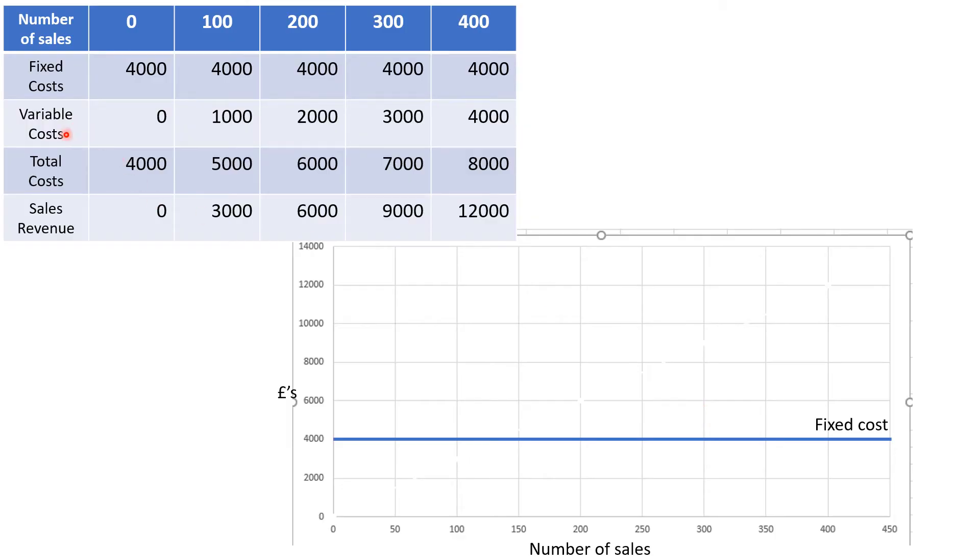Now you don't put the variable cost line on a break-even chart. So if they've given this information to you, it could confuse you a little. The next line is the total cost. So you need to remember fixed cost and total cost.